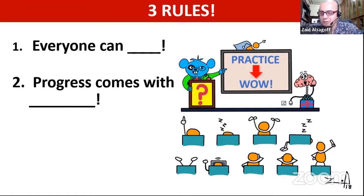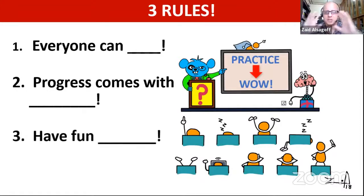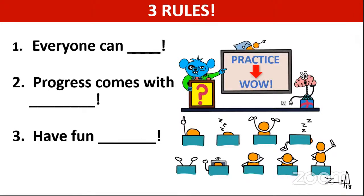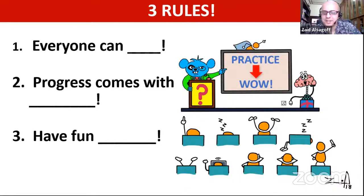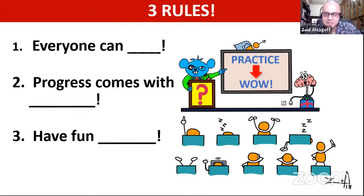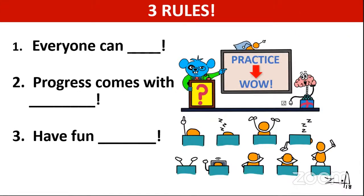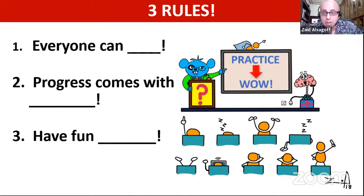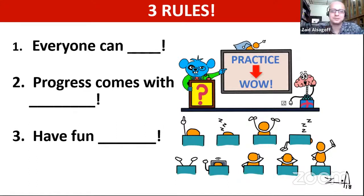The third rule, which is most important and which most adults forget, is: have fun drawing. When you keep this in mind, it's just like a kid. I noticed that when adults draw in my workshops, they are very scared to show their drawings. But with kids, even if they're bad or good, when they draw, the first thing they do is show everyone. We must give back that childhood in us if we want to make drawing have an impact. So these are three rules — everyone can draw, progress comes with practice, and have fun.